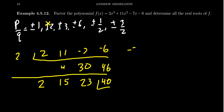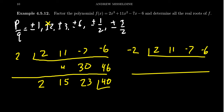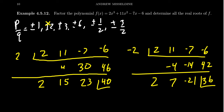Let's try x = −2. With coefficients 2, 11, −7, −6: bring down the 2; 2×(−2) = −4, plus 11 is 7; 7×(−2) = −14, minus 7 is −21; −21×(−2) = 42, minus 6 is 36. That's still not 0. So neither plus nor minus 2 is a root; we can take both off the list.